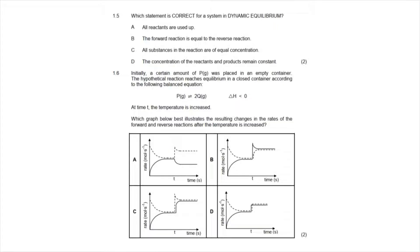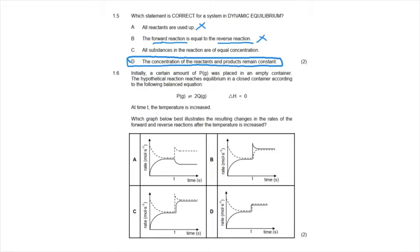Question 1.5 asks which statement is correct for a system in dynamic equilibrium. The correct answer is option D: the concentration of the reactants and products remains constant. Option A is incorrect — that is the definition of static equilibrium when reactants are used up and the reaction stops. Option B is incorrect because it is the rate of the forward reaction that must equal the rate of the reverse reaction, not the reactions themselves. Option C is incorrect because concentrations must be constant, not equal.